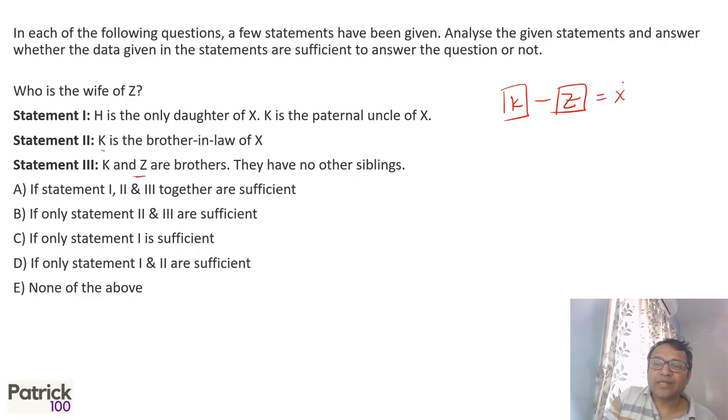K is the brother-in-law of X. That means X should be the wife of Z. That's the only way it can be possible. So from these two statements, second and third, you can make out that X is the wife of Z.